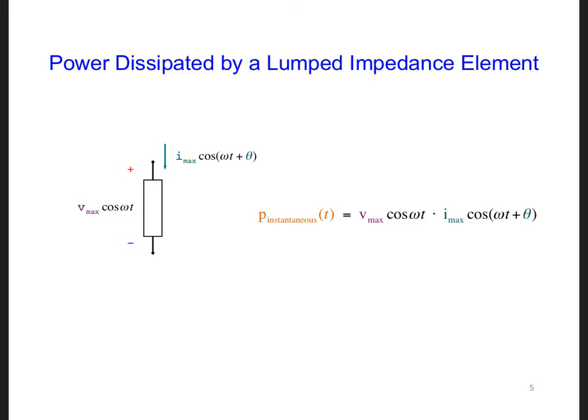You may recall from an earlier circuits class that the instantaneous power dissipated by the impedance element is found by taking the dot product of the voltage across and the current through the lumped impedance.